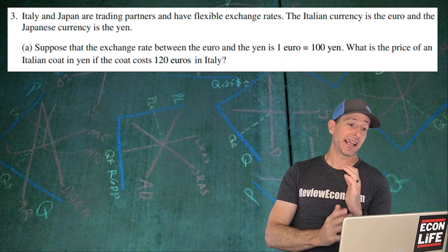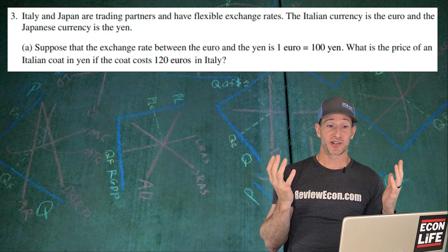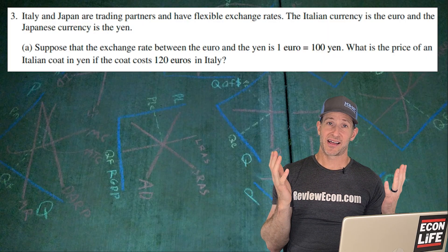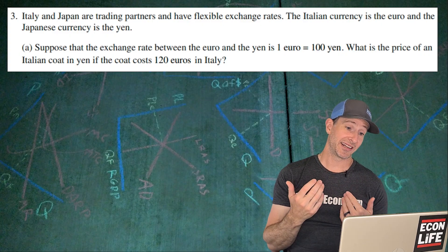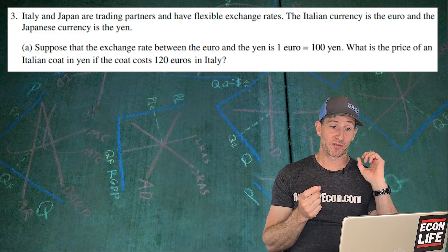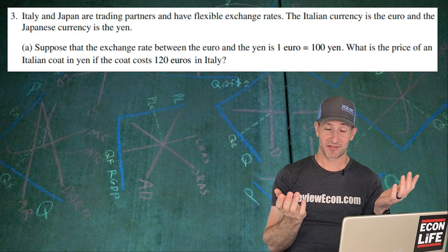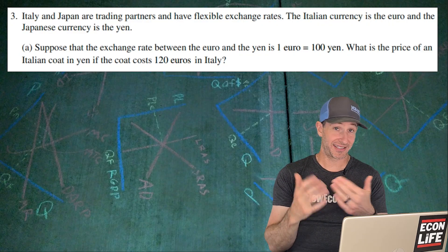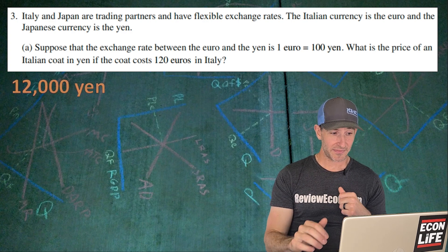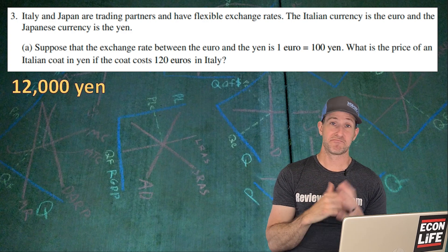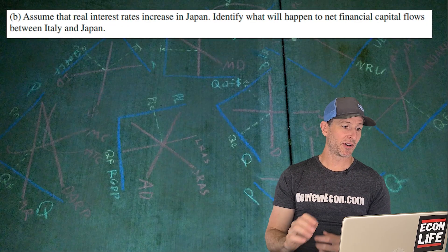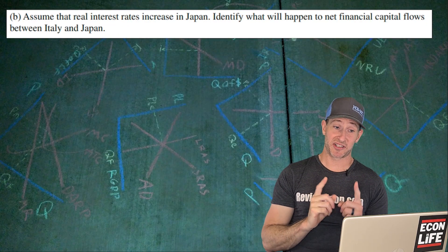For number three, Italy and Japan are trading partners. They have flexible exchange rates. We're going to calculate the conversion here. We have a coat that costs 120 euros in Italy, and we have one euro equals 100 yen. You're just going to take that 120 euros times it by 100. That tells you how much it would cost in yen. So it's 12,000 yen. You don't have to show the math, just state it.